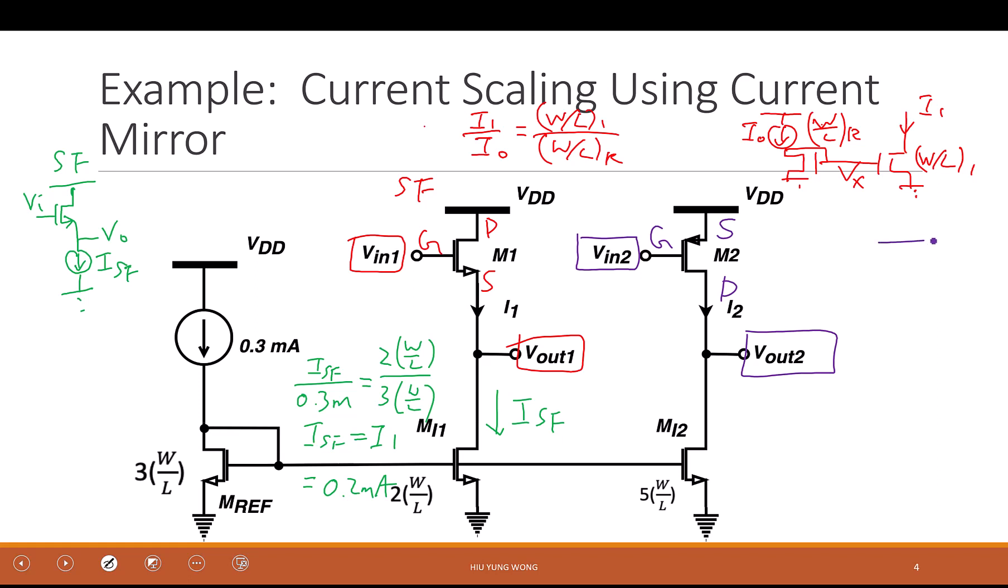Again, how do we bias a PMOS common source? What we usually do is V in, V out. I cannot throw it, right? I need to bias by using a V out. Or in this case, I again bias it with a common source. I mean, with a current source, right? So this is current source, right?